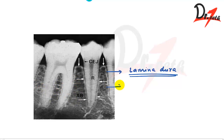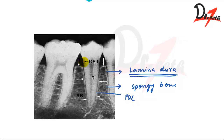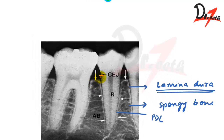We also have a meshwork of bone — this is the spongy bone. Between the lamina dura and the root, you can find a black line going throughout — this is where our periodontal ligament is present. The alveolar bone is approximately 1 mm apical to the CEJ.